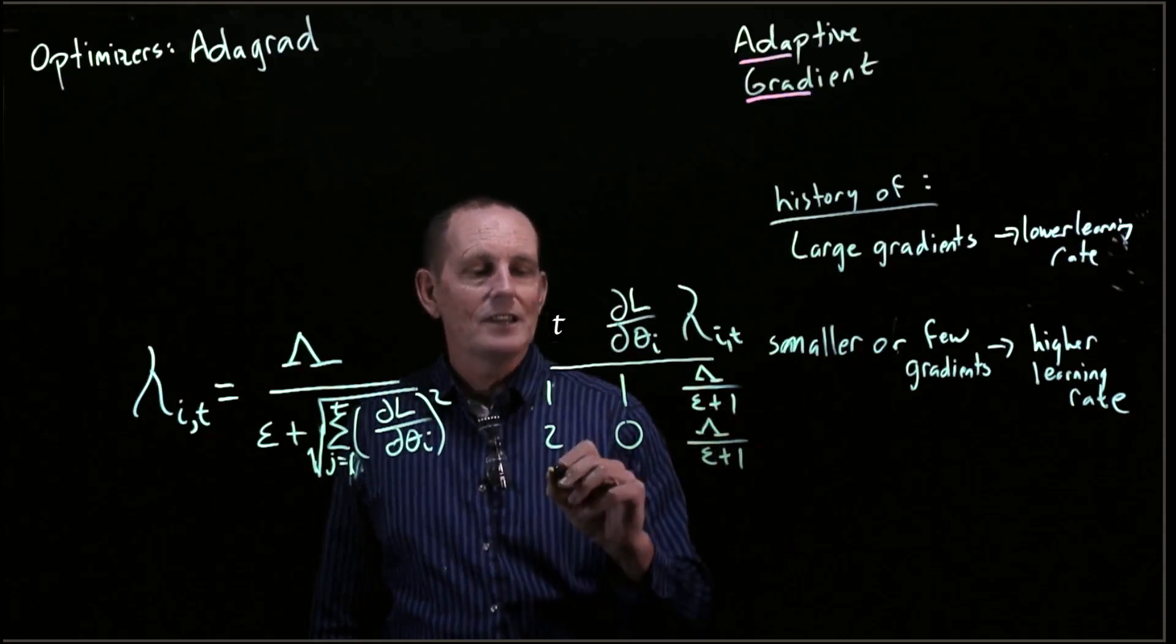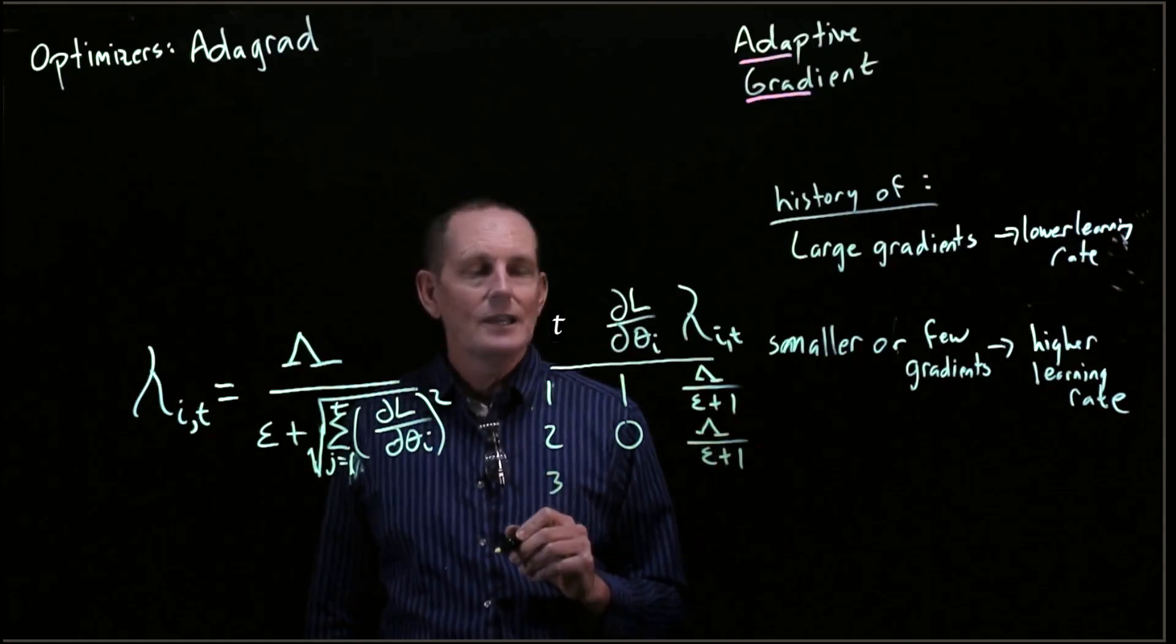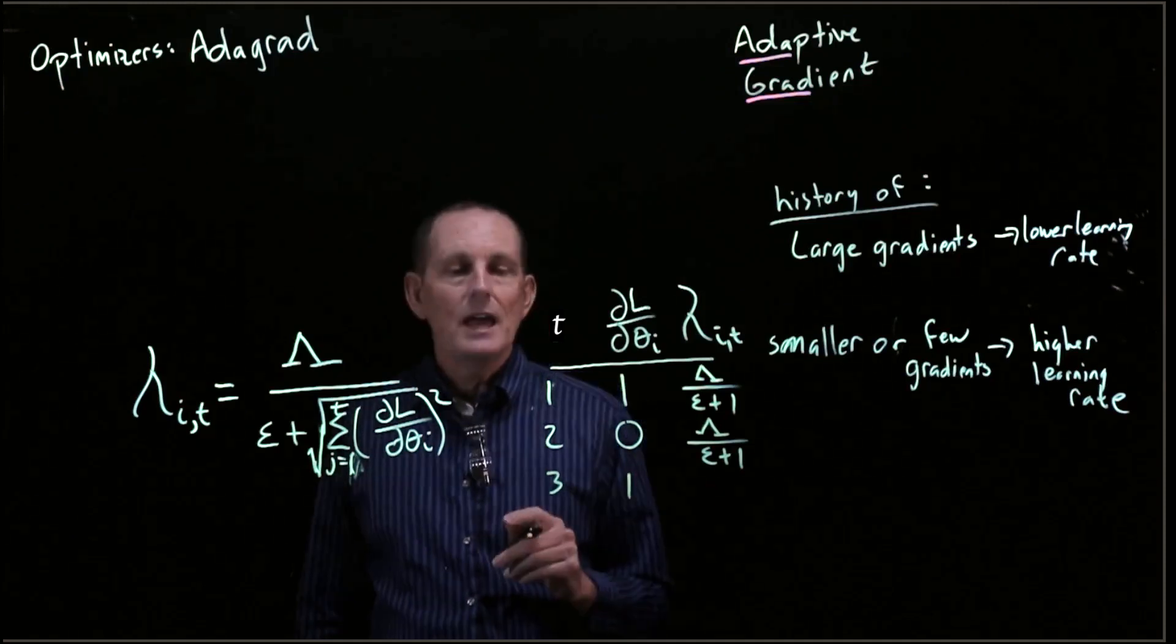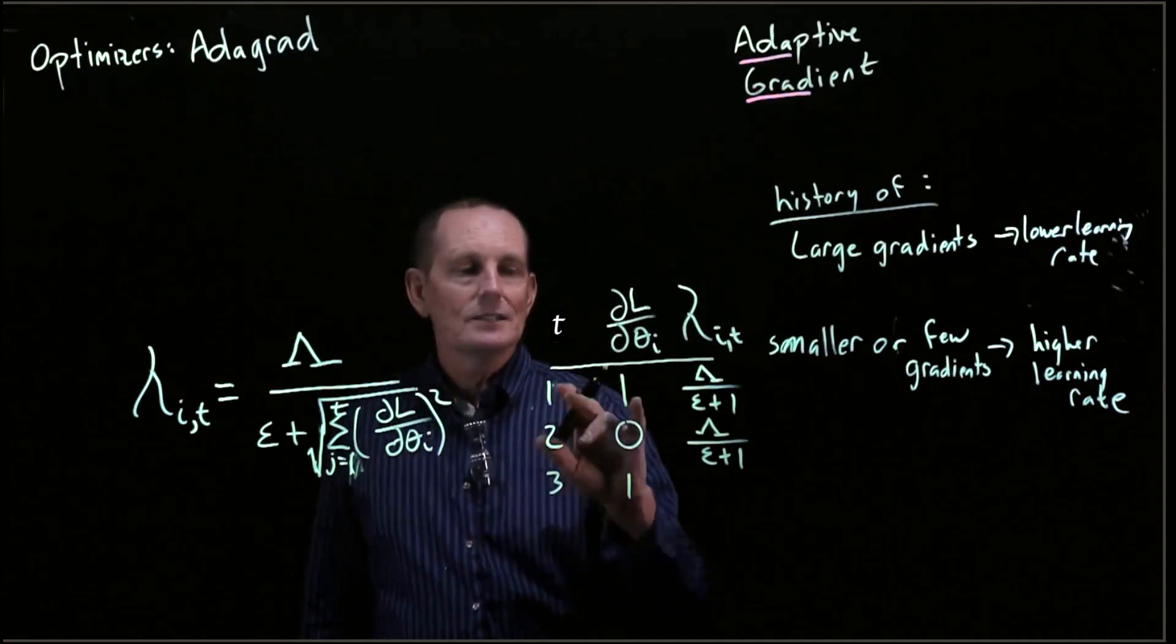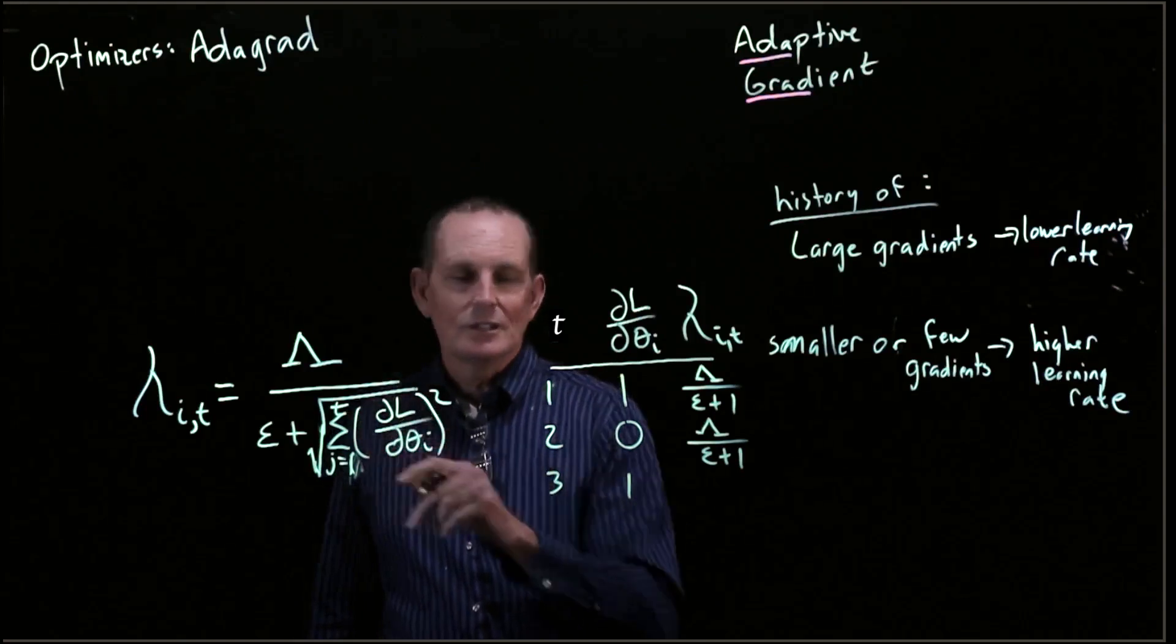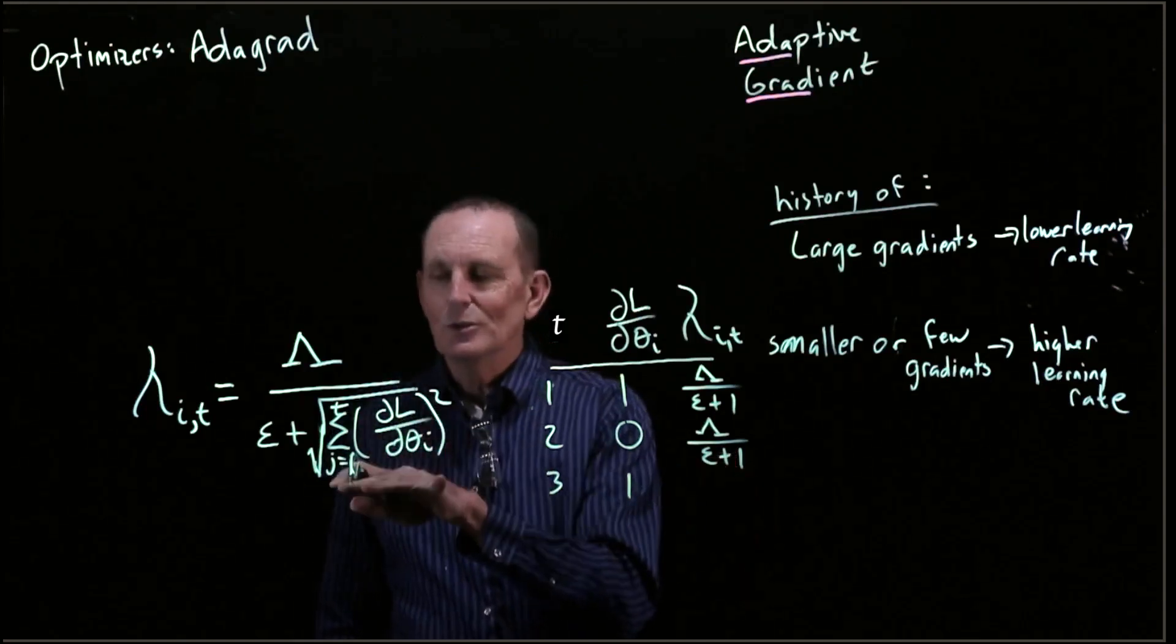Now let's say we have, at time step 3, a gradient of 1 again. Then our sum of square gradients is going to be 2.